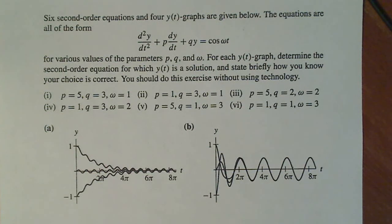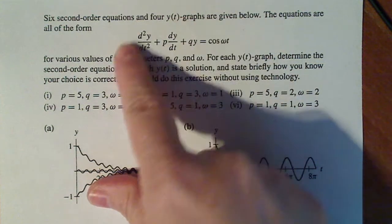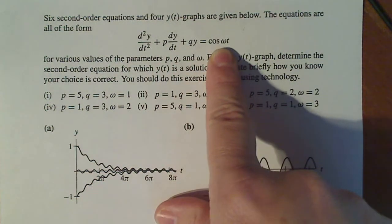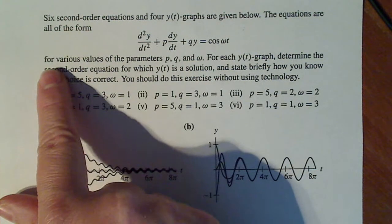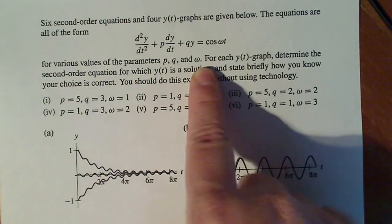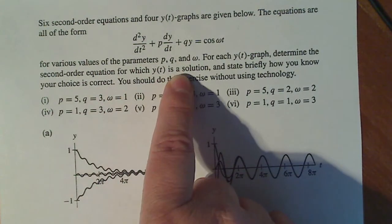Six second order equations and four y(t) graphs are given below. The equations are all of this form. So the second order differential equations all have this form. This is the natural forces and this is the external forcing function. For each y(t) graph, determine the second order equation for which y(t) is a solution.